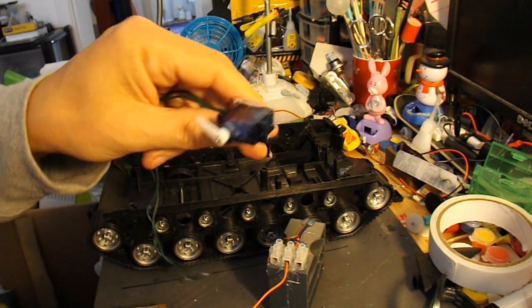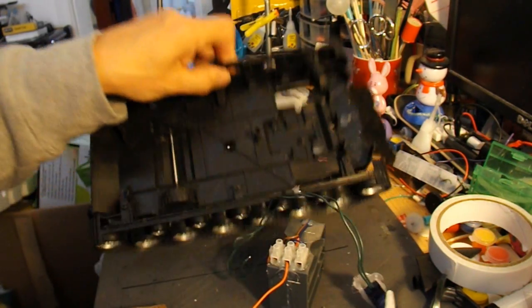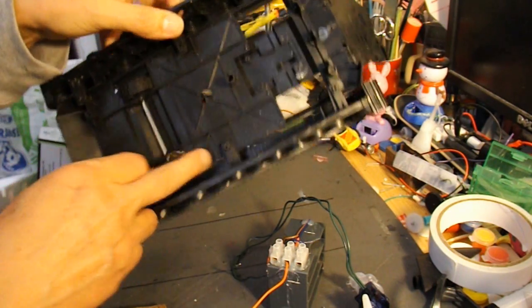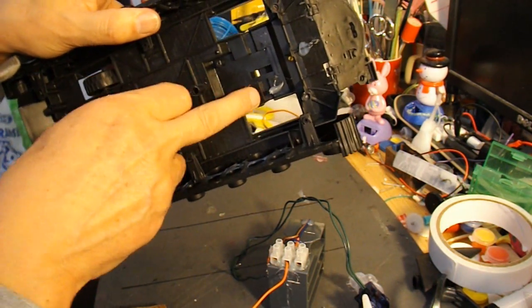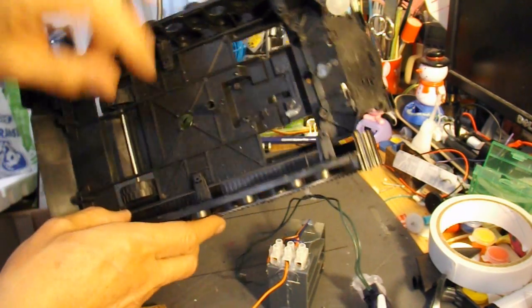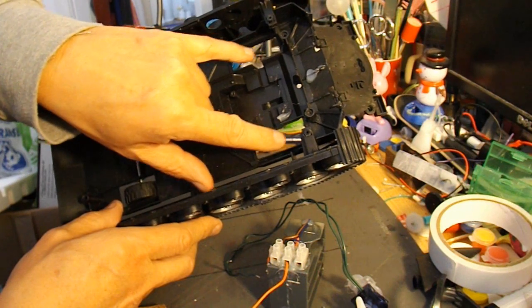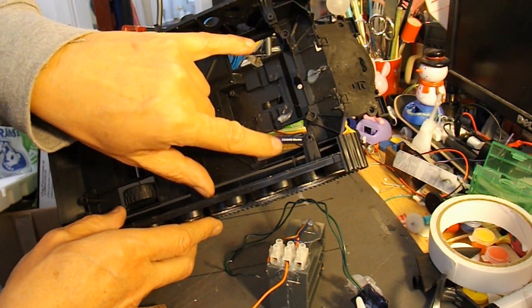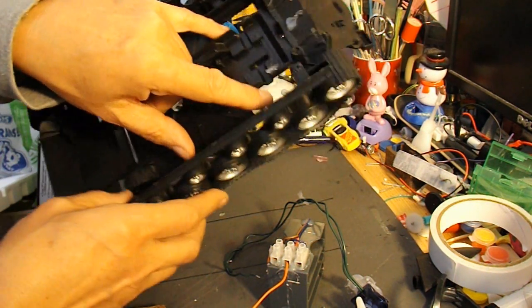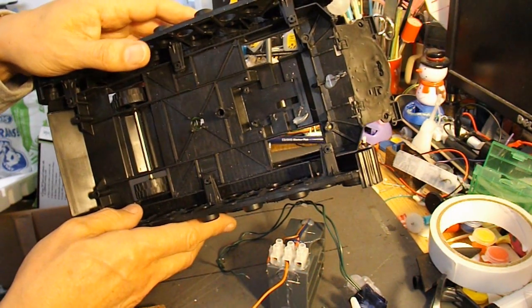And it occurred to me that I could put two of these servos in the back of the tank to replace the wheels that were there, the axles that were there. And I could have, I think you'd call it skid steering, so you can either have them both going forwards, or one forwards and one backwards, and get the tank to turn. Or at least it's worth a try anyway.